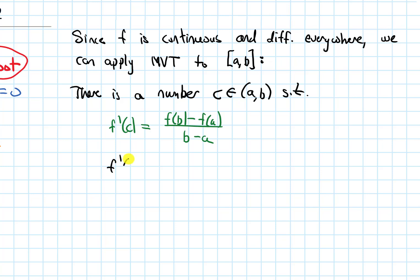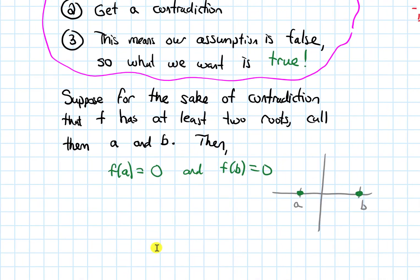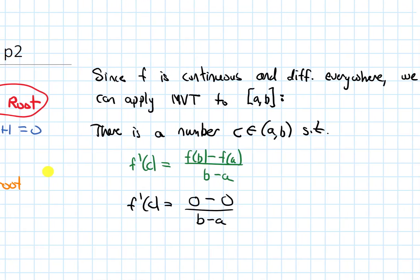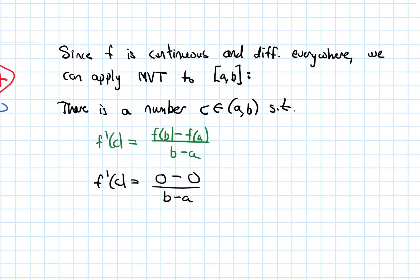We assumed f(b) and f(a) were both zero, so the numerator is zero minus zero, and over b minus a — which is nonzero since a ≠ b — giving us zero. So f'(c) = 0. We're getting that the derivative at c equals zero.